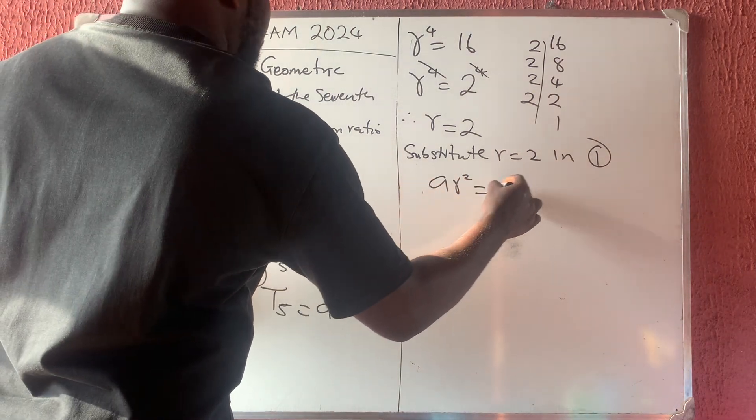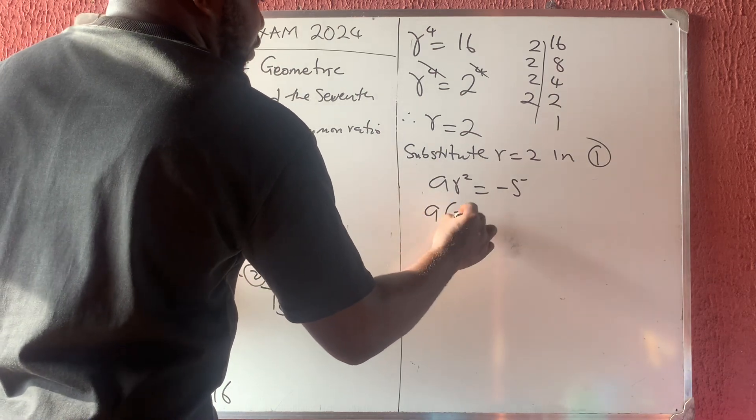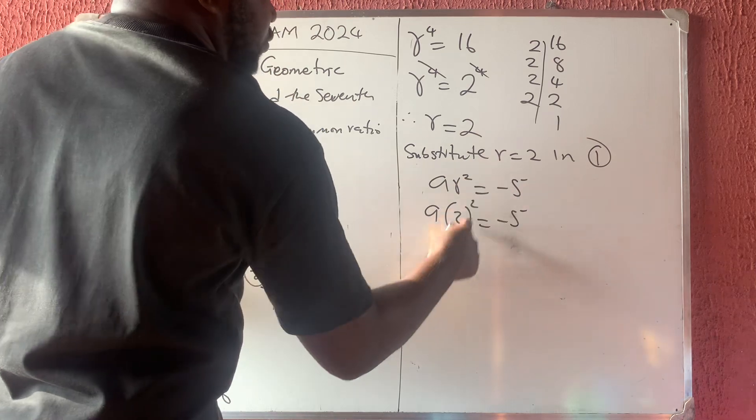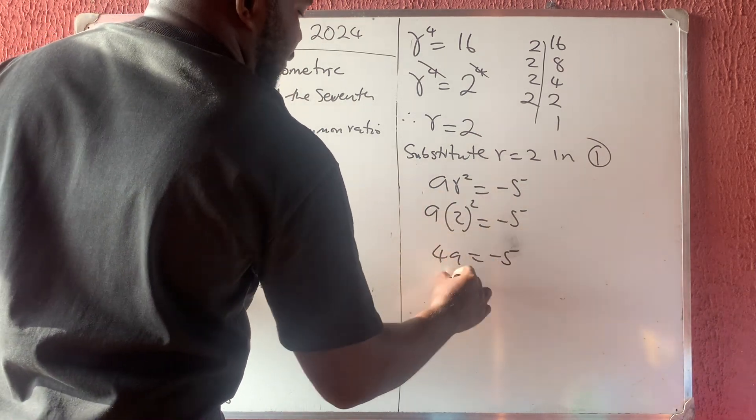So I'm having that A R squared is equal to minus 5. So what do we have? A, then R is 2 squared is equal to minus 5. 2 squared is 4. 4 times A is what? 4A is equal to minus 5.